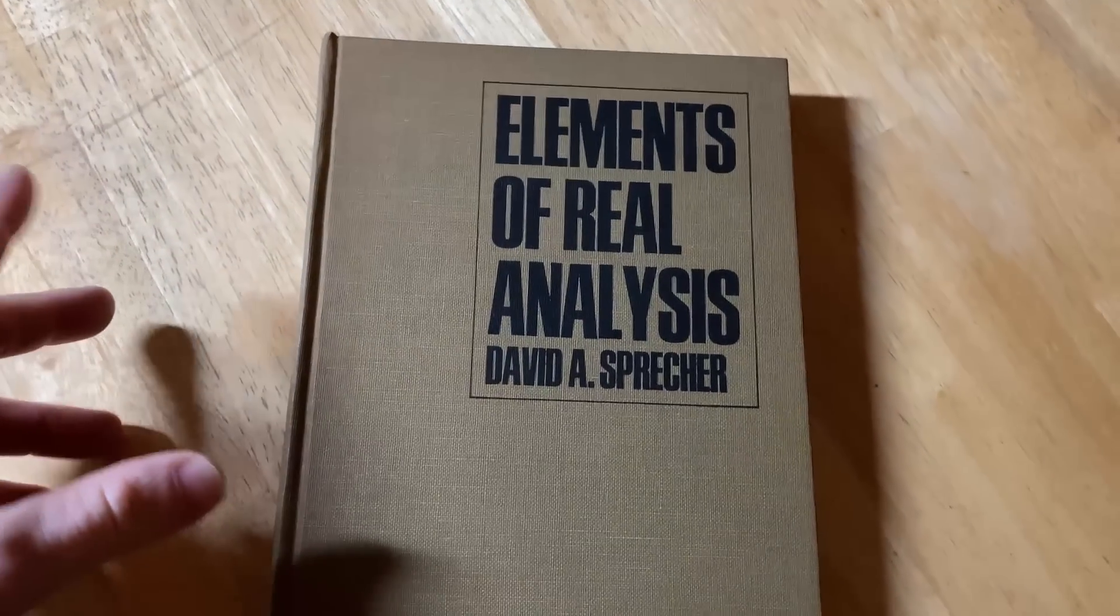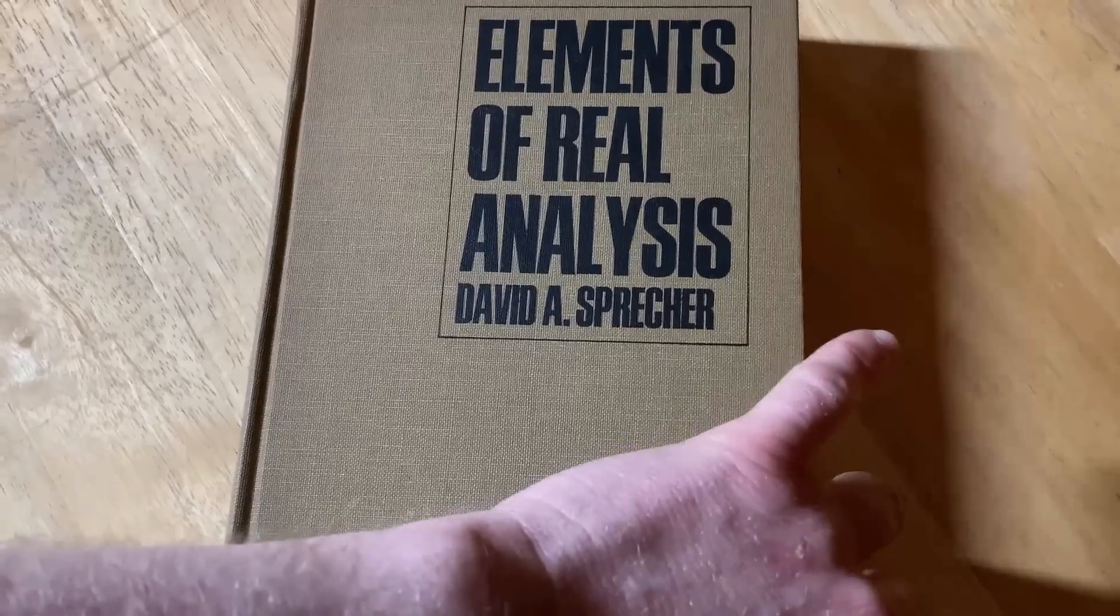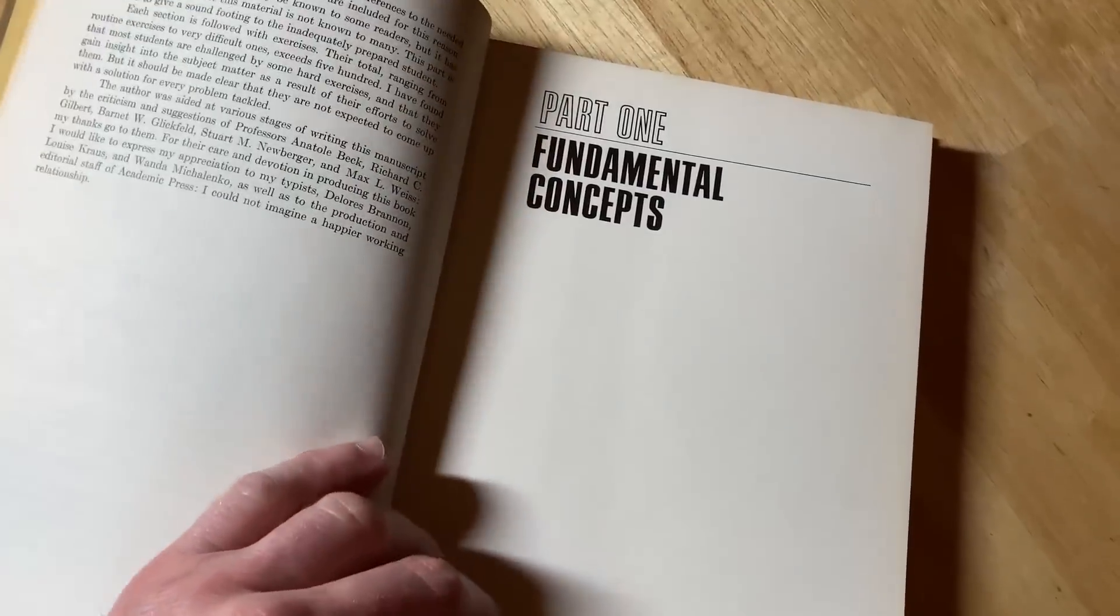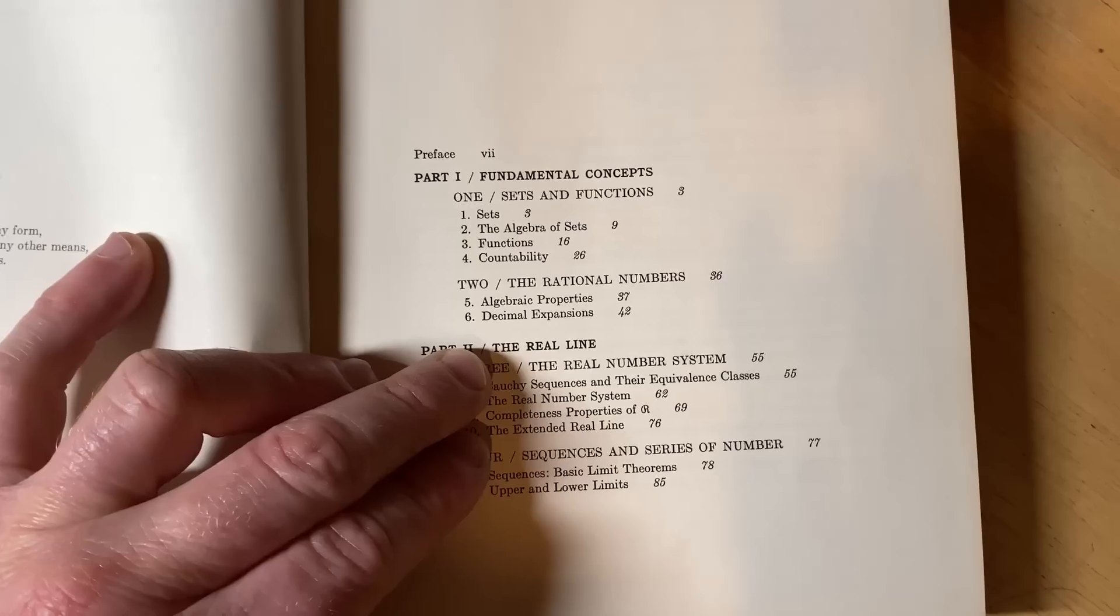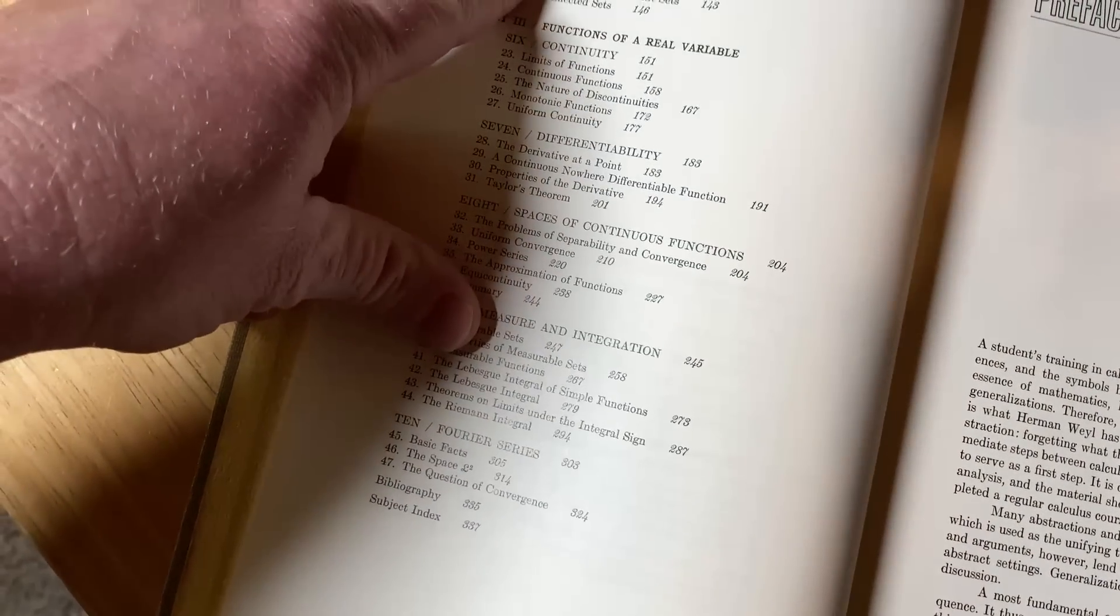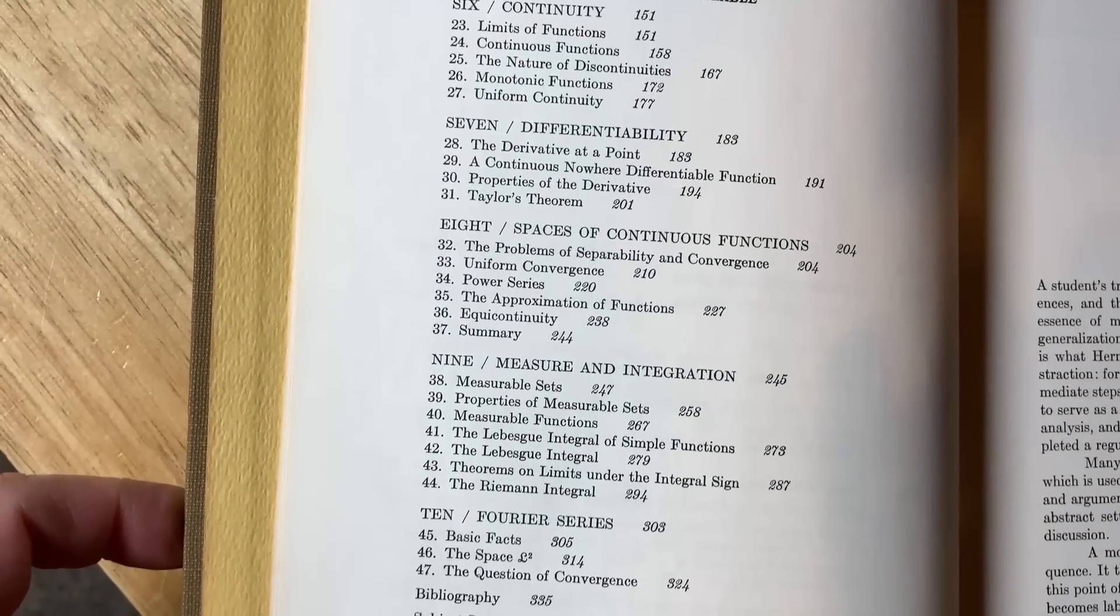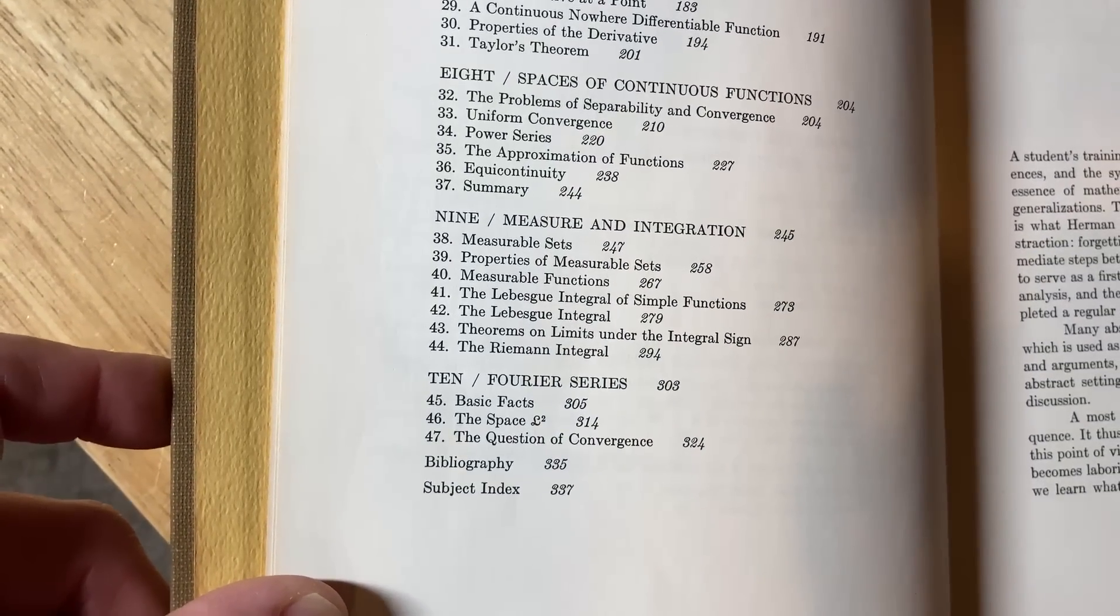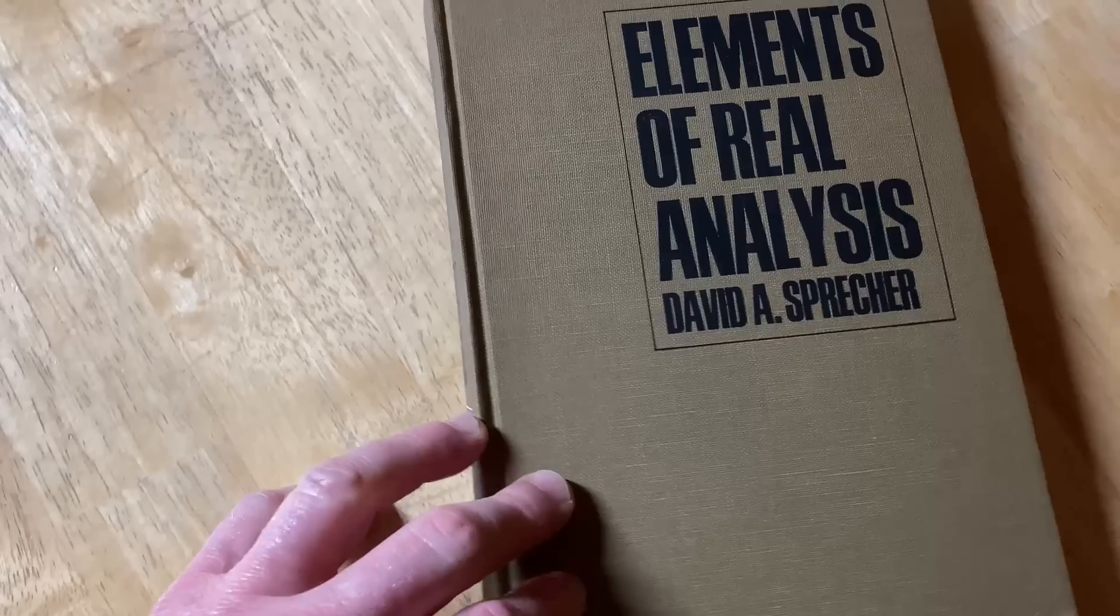This one is a lot more elementary than Rudin's book. It's called Elements of Real Analysis and it was written by David A. Sprecher. So this is a much more introductory book, but at the same time it does have some more advanced topics. Let me show you quickly the table of contents so you can see exactly what's in this book. So it starts with sets and functions, the rational numbers, the real line, and then the structure of point sets, functions of a real variable. And then you see it talks about differentiability, continuous functions, and it even does measure and integration and Fourier series. So it does have more advanced topics than a lot of other analysis books. It's quite an interesting book.